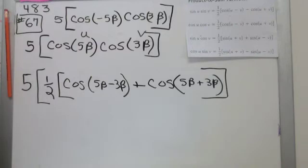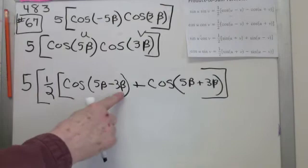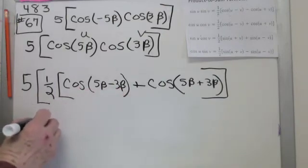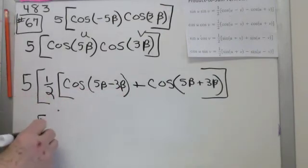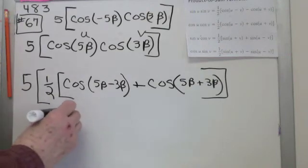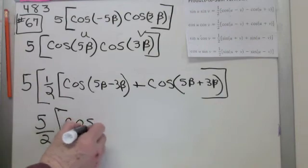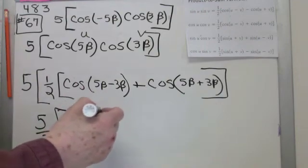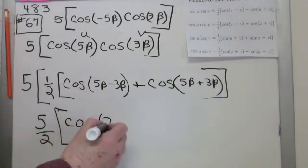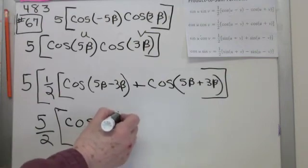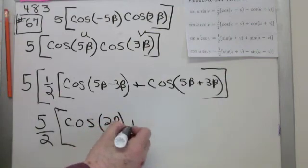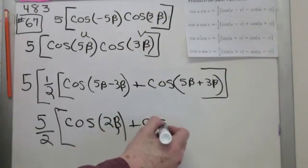The next part's pretty easy. Just simplify. So what's 5 beta minus 3 beta? So I've got the 5. I could do the 5 times the one-half. So let's do that. It's five-halves. And then I'm going to simplify this. So I get cosine. What's 5 beta minus 3 beta? Hopefully, 2 beta, right? No big deal. And then plus cosine 8 beta.